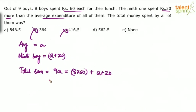Simplifying: nine A minus A gives eight A, which equals eight into 60 plus 20, that is 480 plus 20, which is 500. So eight A equals 500.